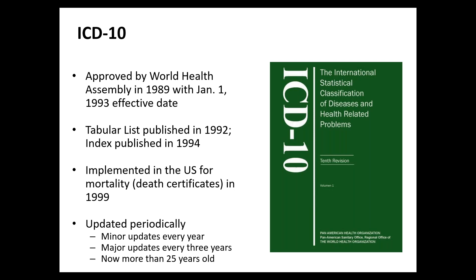The WHO version of ICD-10 has been around for almost 25 years. In the time that ICD-10 was published, it was manually curated. The tabular list came out first in 1992, and then the index was published approximately two years later. Even though WHO gave an effective date of 1993, countries really could not begin the migration process until both the tabular and the alphabetic index were available.